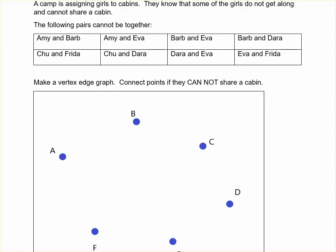A camp is assigning girls to cabins. They know that some of the girls do not get along and cannot share a cabin. We're going to begin by making a vertex-edge graph and we're going to connect those points if they cannot share a cabin.